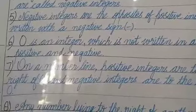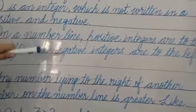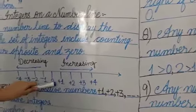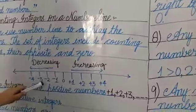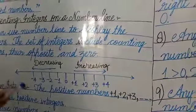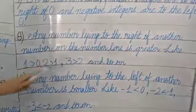Point number six: zero is an integer. Zero is also an integer, shown on the number line, but it is neither positive nor negative. Point number seven: on a number line, positive numbers are to the right of zero. This is the number line, this is zero, and these are the positive integers to the right of zero, and the negative integers are to the left side of zero.